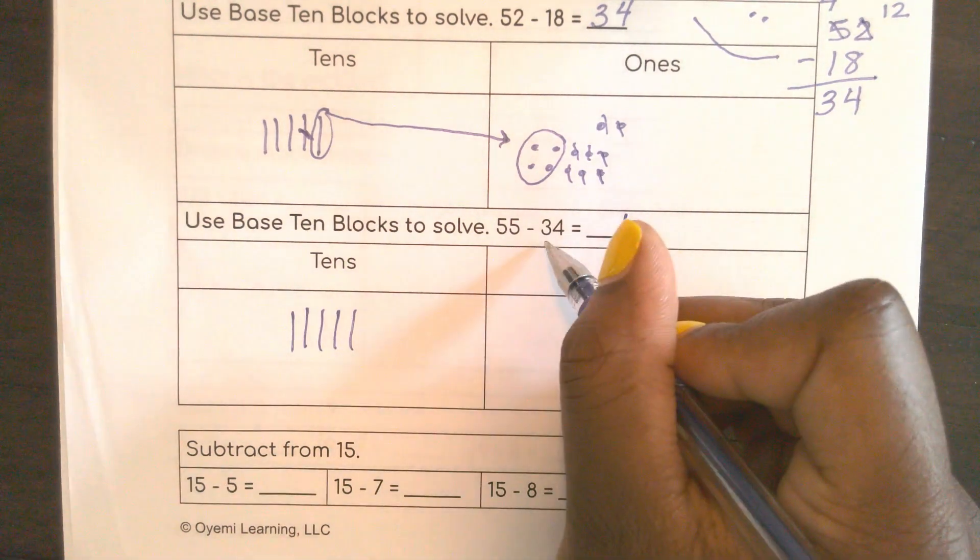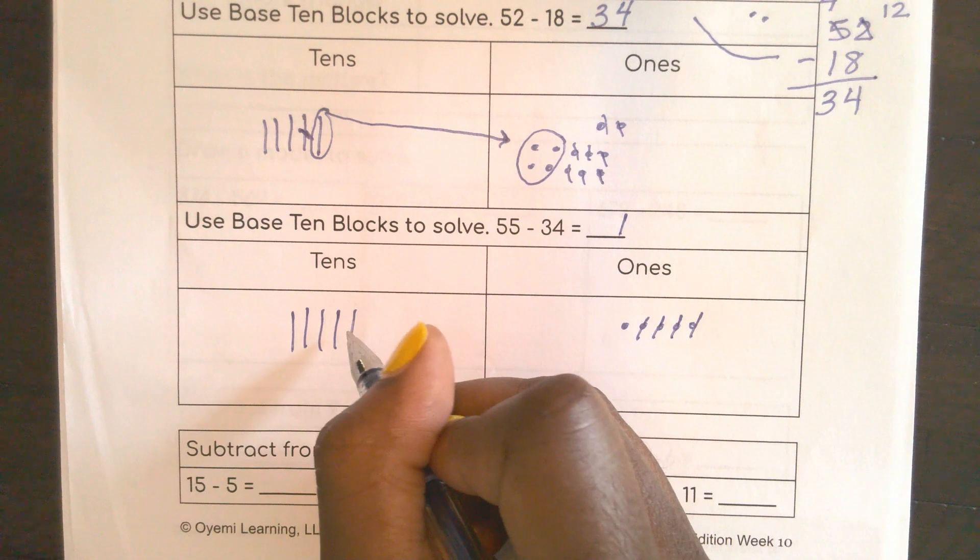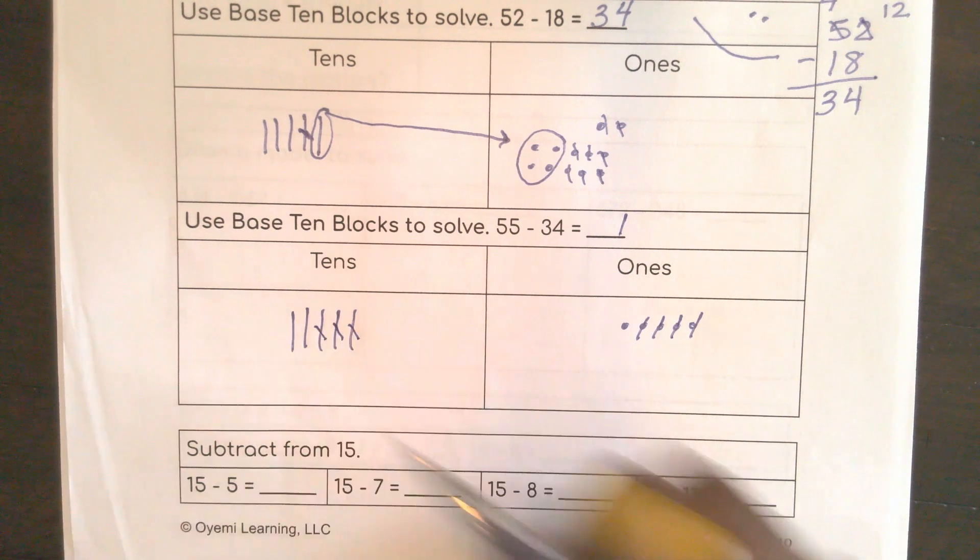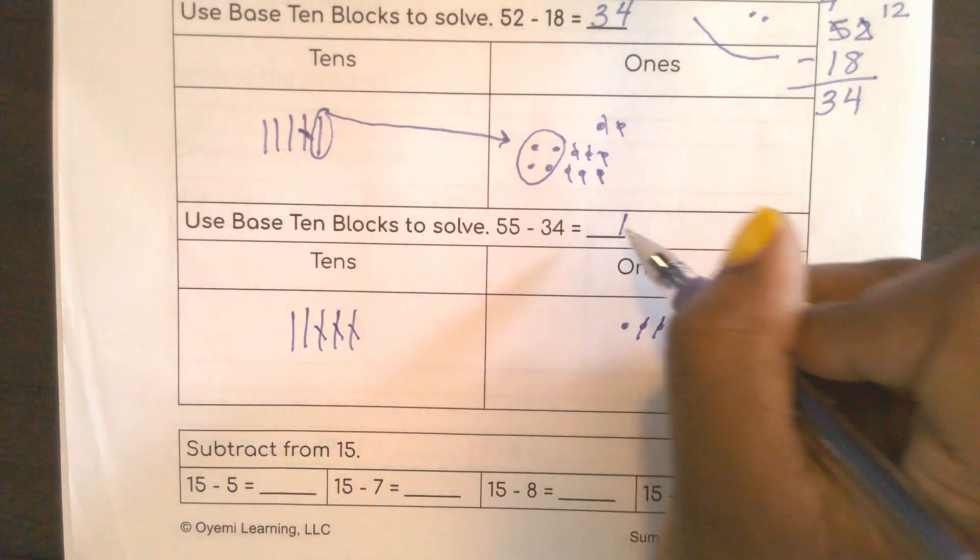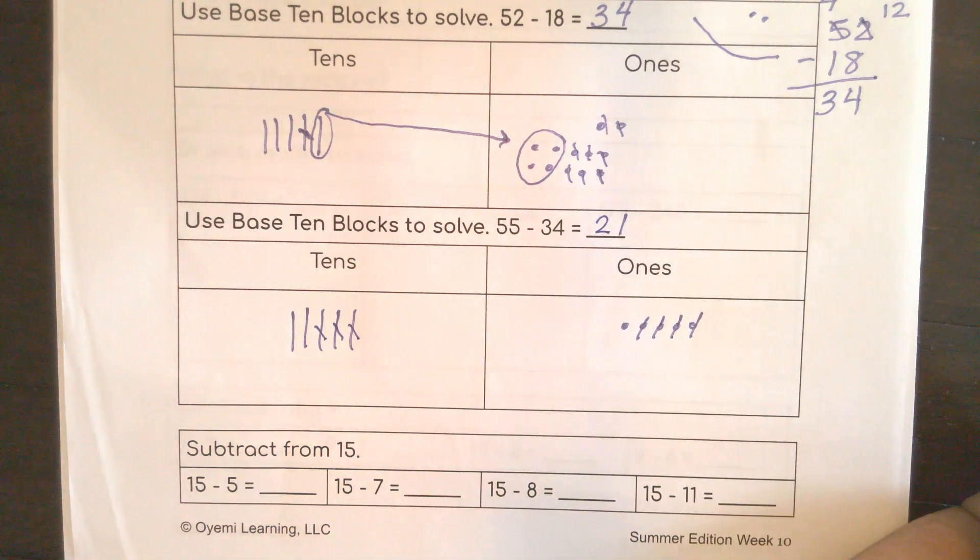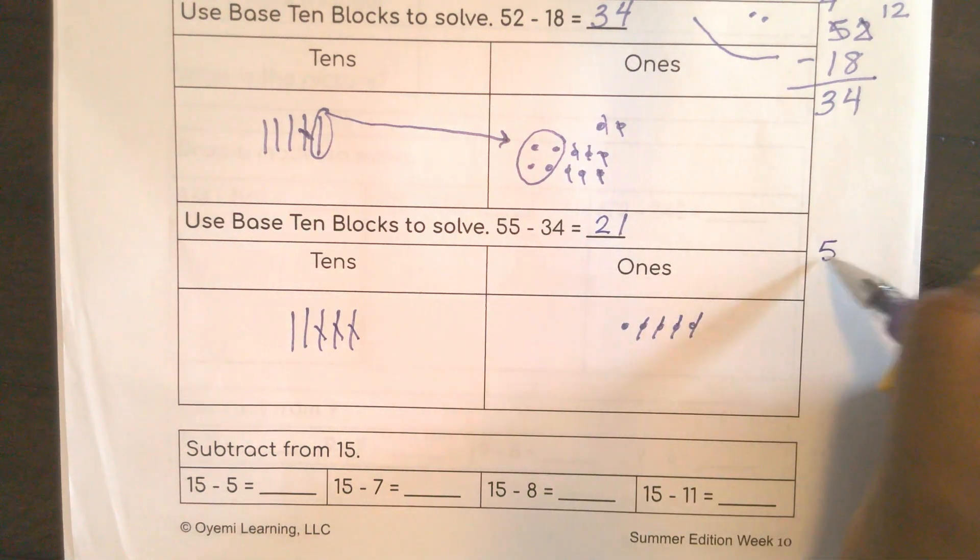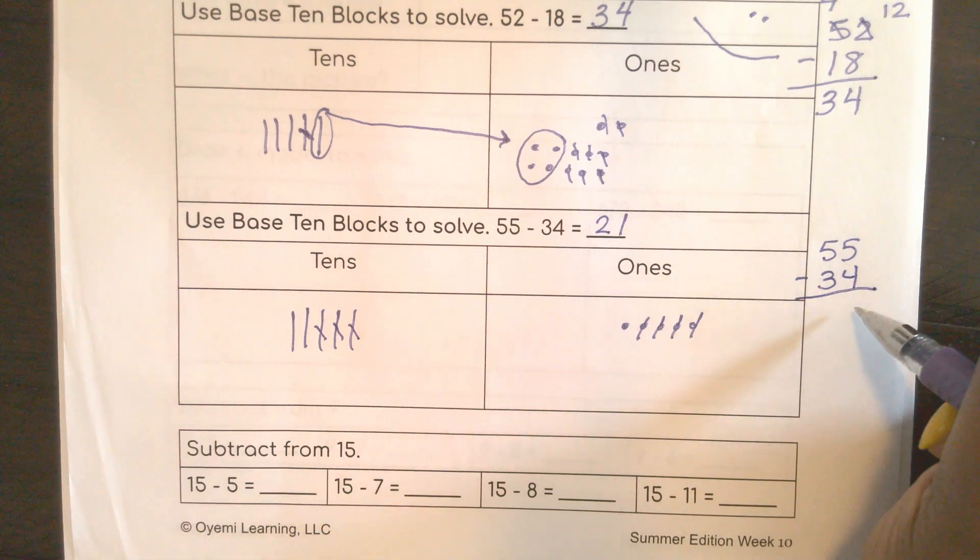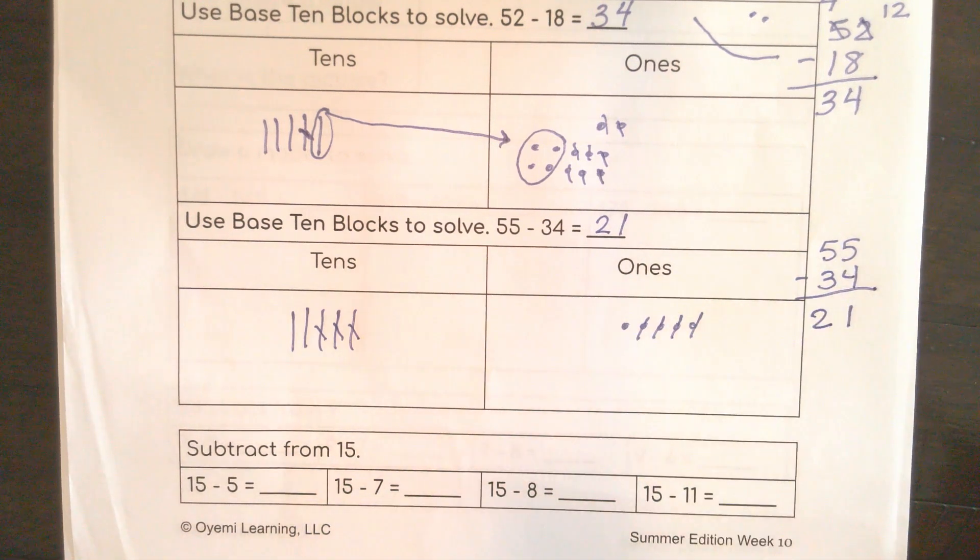And I can also take 30 away from 50. 10, 20, 30. And what do I have left? 20. 55 minus 34. 1, 21. 21. Excellent.